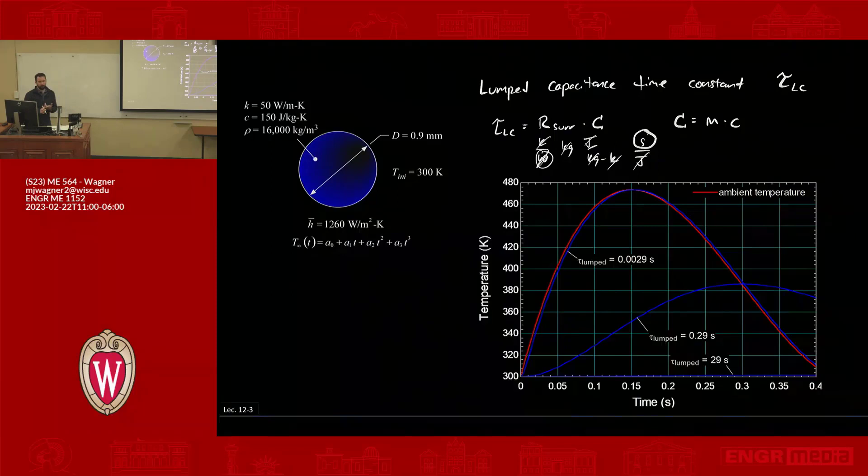So first thing you do is calculate Biot number, convince yourself you can use lump capacitance. If not, we have to do something else. Second thing is look at the time constant, convince yourself you need to actually do anything at all. And those are always the two things you're going to want to do when you're first solving this type of problem.